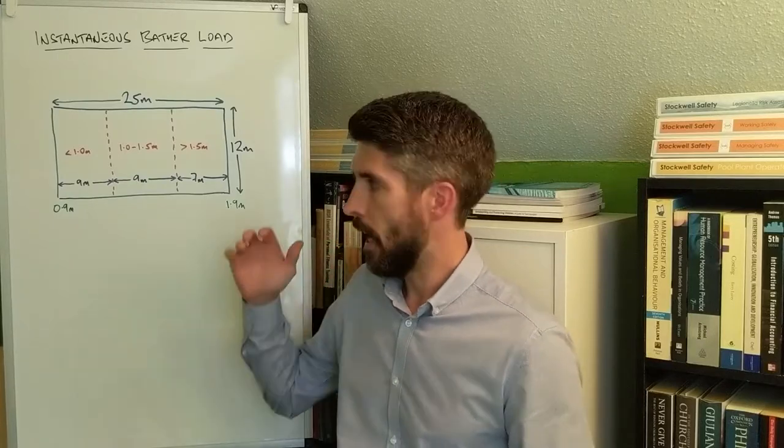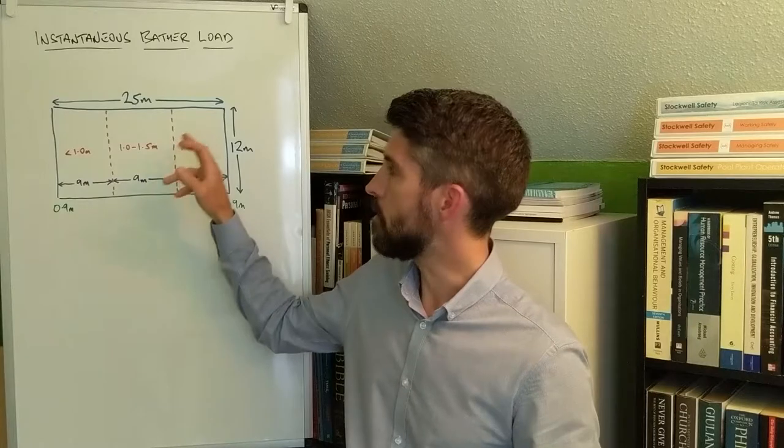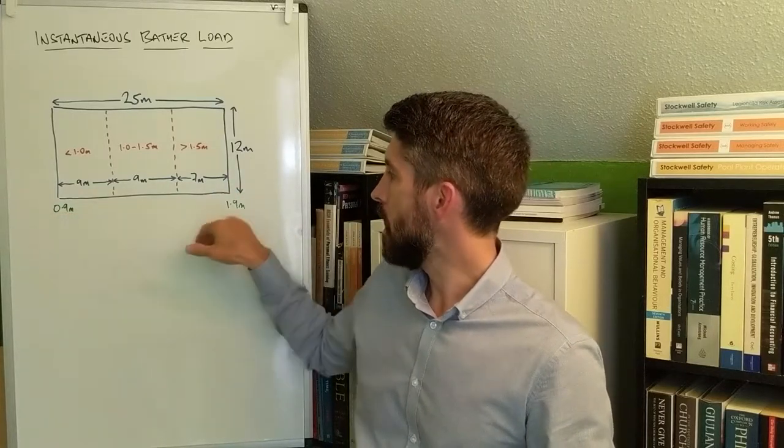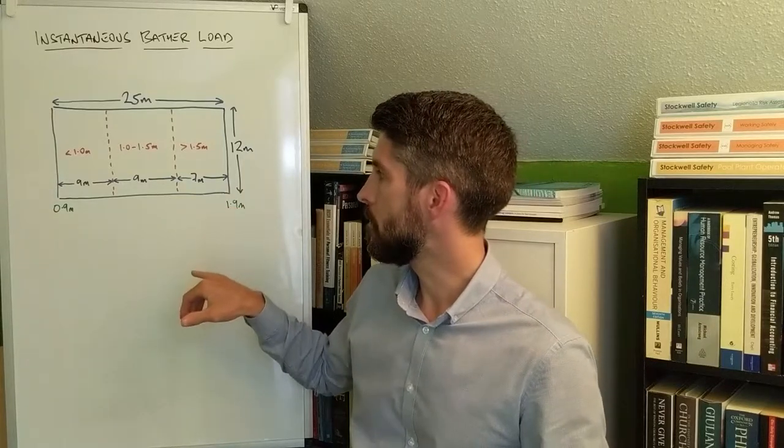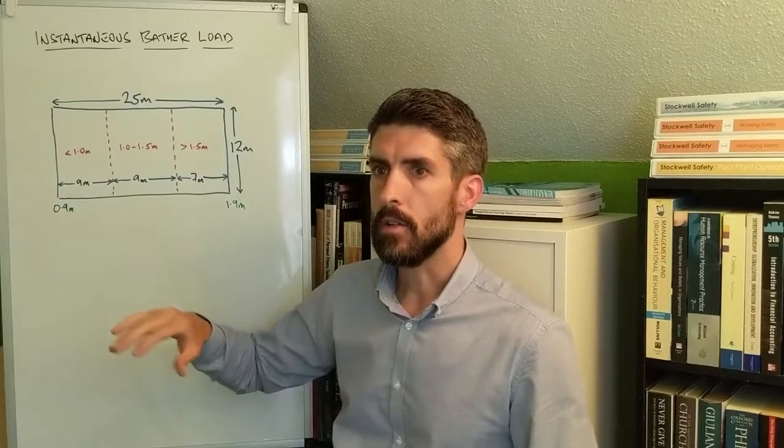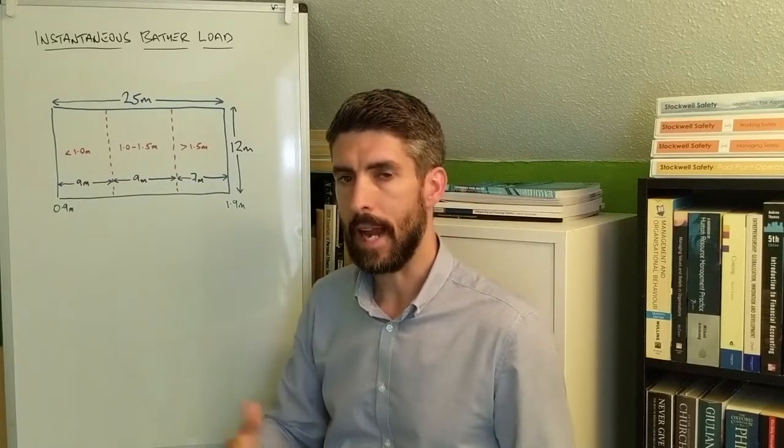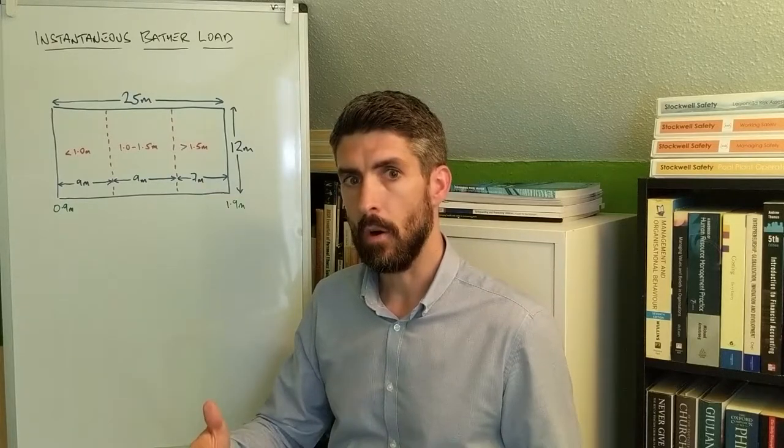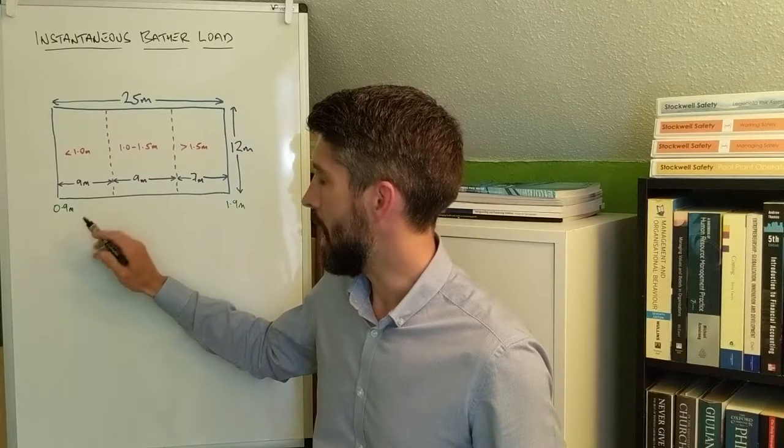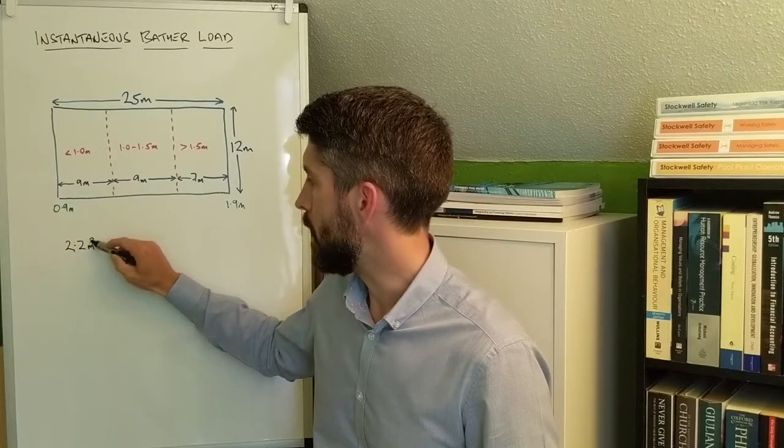Imagine you've got a pool, and you're going to have to use your own pool measurements that are accurate for your pool. For example, say you've got a pool that's 25 meters by 12 meters, with a shallow end of 0.9 meters and a deep end of 1.9 meters. The instantaneous bathing load is worked out by looking at the square meterage of surface area, because each bather should be allowed a certain square meterage of space depending on the depth. In water that is less than a meter deep, each bather should be allowed 2.2 meters squared of space.